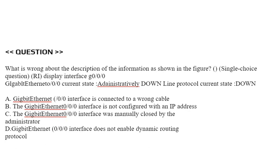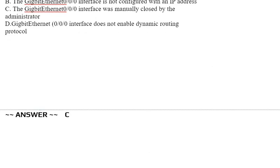Next question: What is wrong about the description of the information? Option A: GigabitEthernet 0/0/0 interface is connected to a wrong cable. Option B: GigabitEthernet 0/0/0 interface is not configured with an IP address. Option C: GigabitEthernet 0/0/0 interface was manually closed by the administrator. Option D: GigabitEthernet 0/0/0 interface does not enable dynamic routing protocol. Correct answer is Option C.